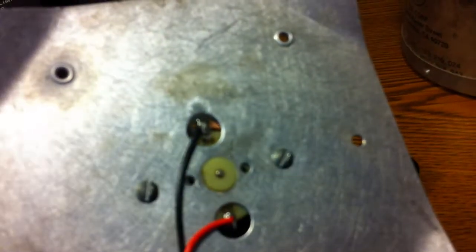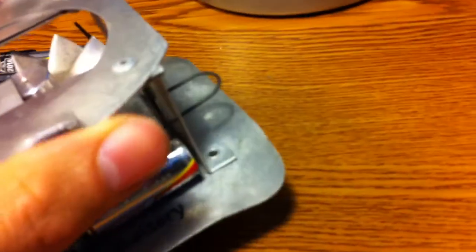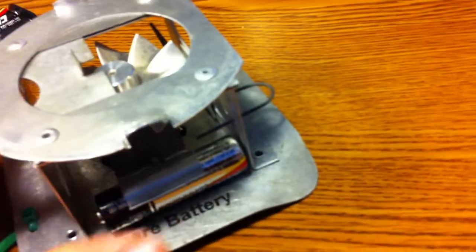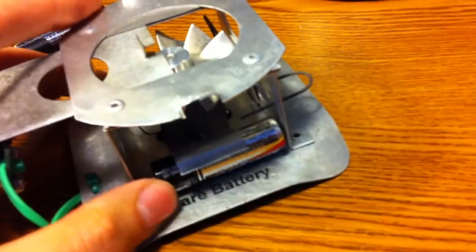I also beefed up the connection on the negative side. It's a little hard to see, but there's some solder wick in there that basically connects to the frame, because I found that the actual motor wasn't making a very good connection to ground.